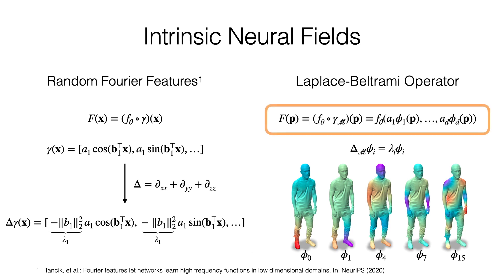To define intrinsic neural fields, we replace sines and cosines with the eigenfunctions of the Laplace-Beltrami operator. This yields a purely intrinsic representation, and by choosing the number of eigenfunctions, the frequency spectrum of the neural field can be controlled. In the paper, we prove a generalization of the stationarity result from the random Fourier features paper for intrinsic neural fields.